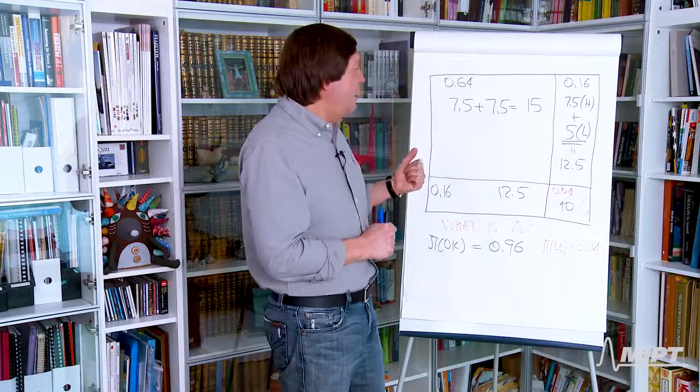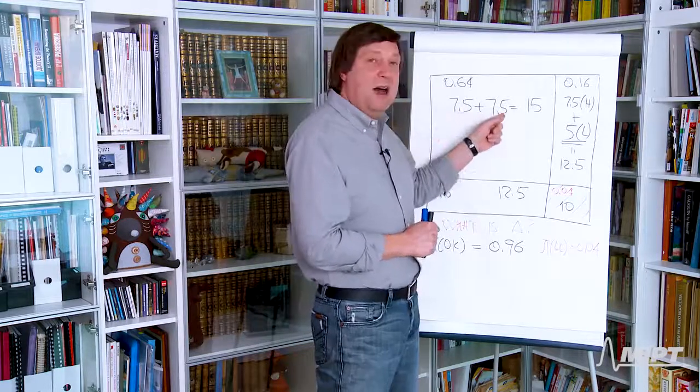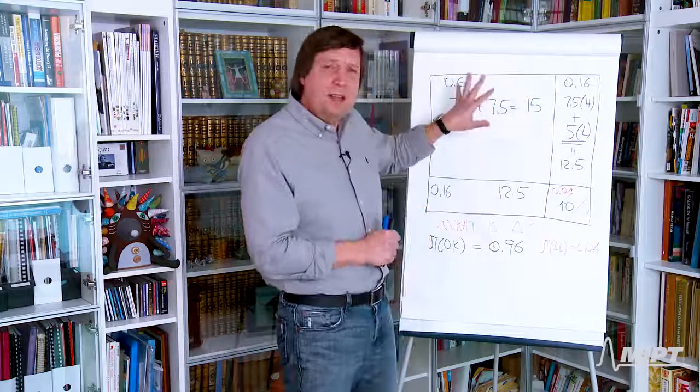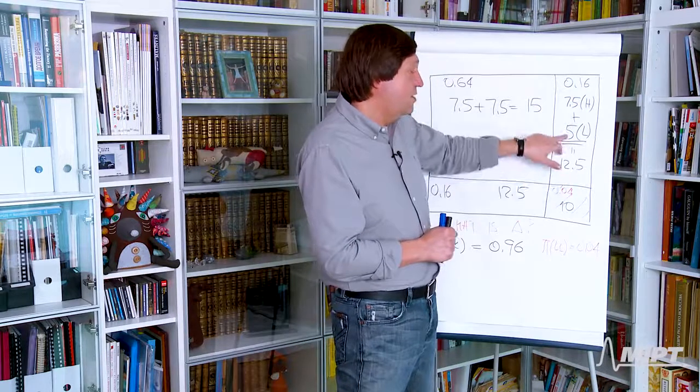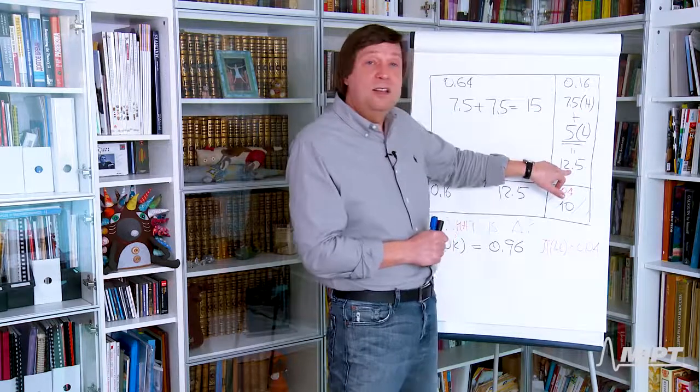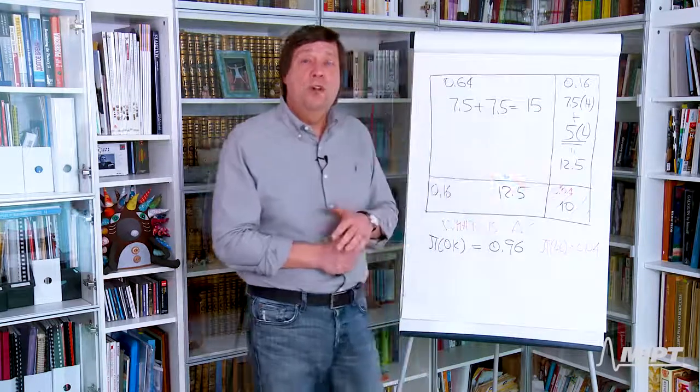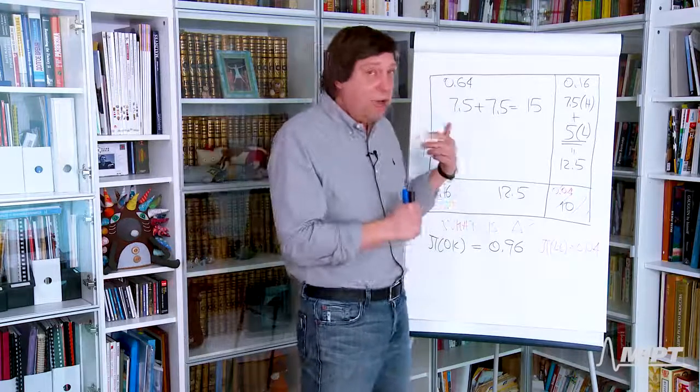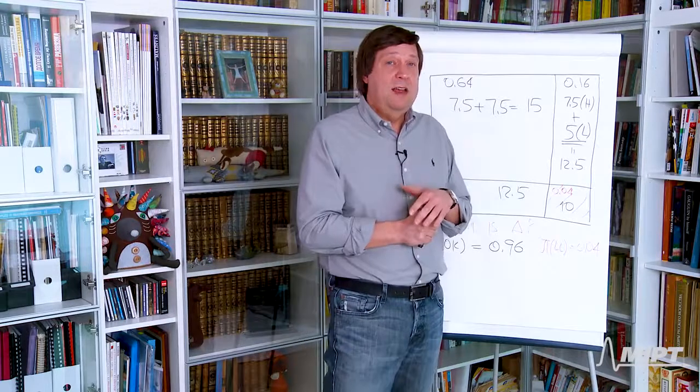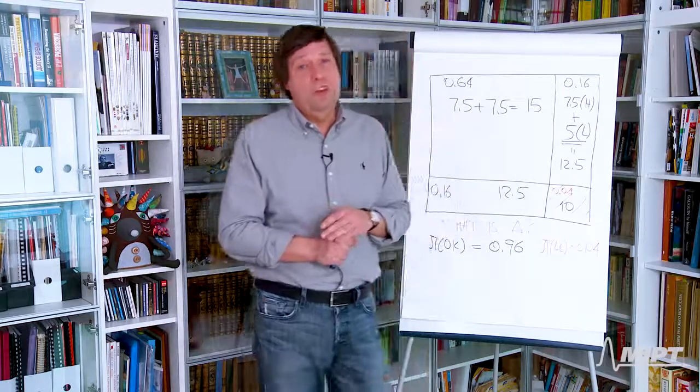But, here, again, if this is 5, and this is, let's say, 7.4, it falls short of 12.5. So, the bank would have gotten liquidated with a probability of 0.36 and this whole scheme would have collapsed.